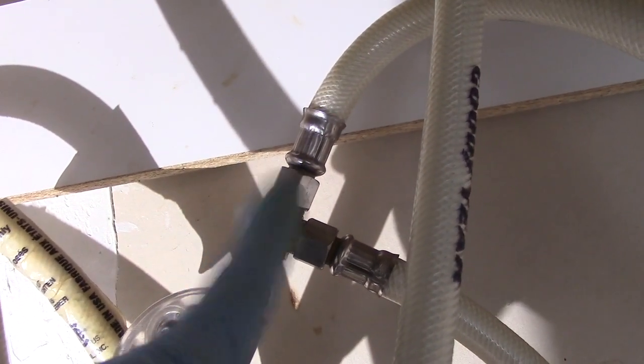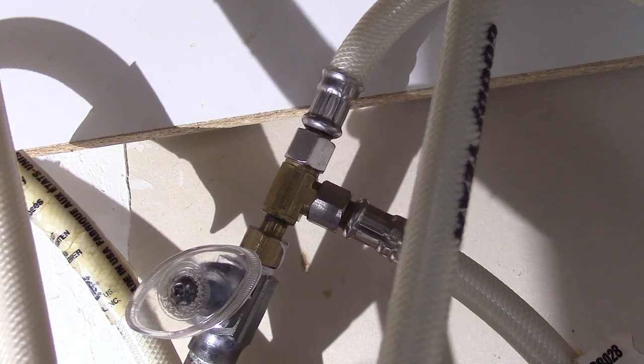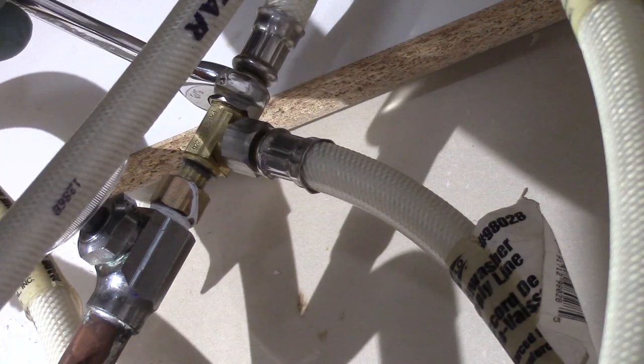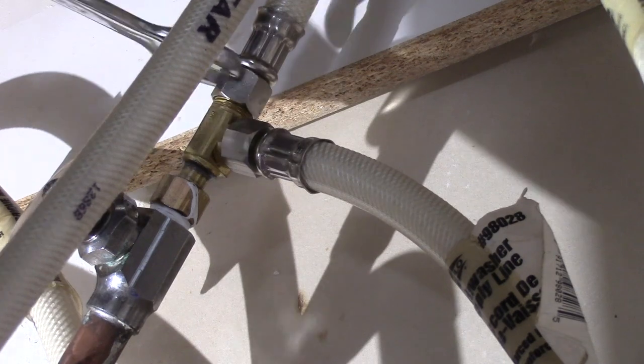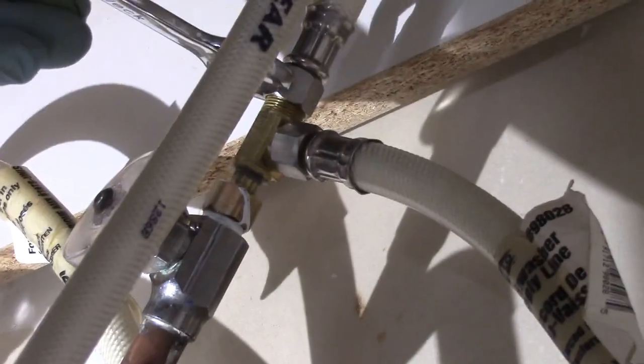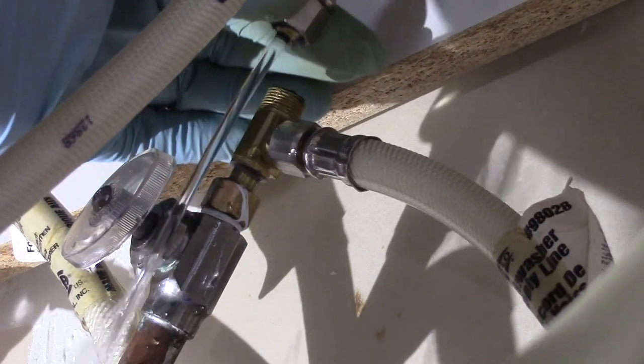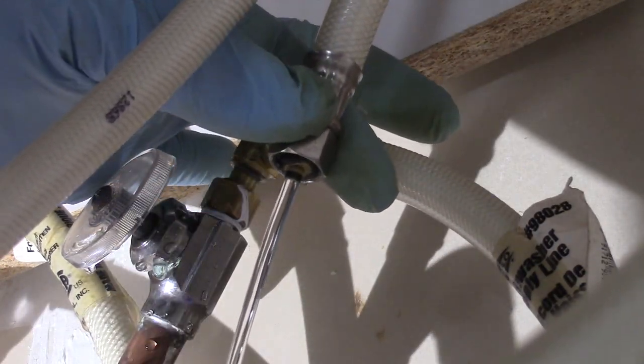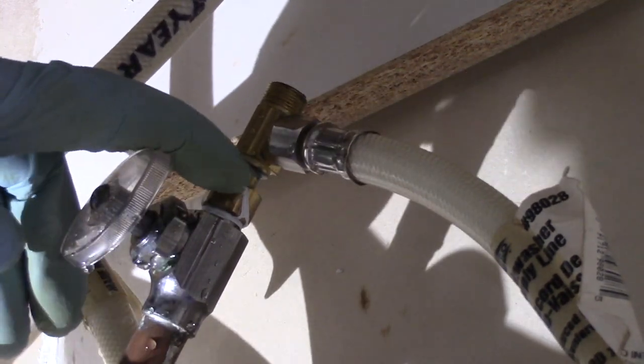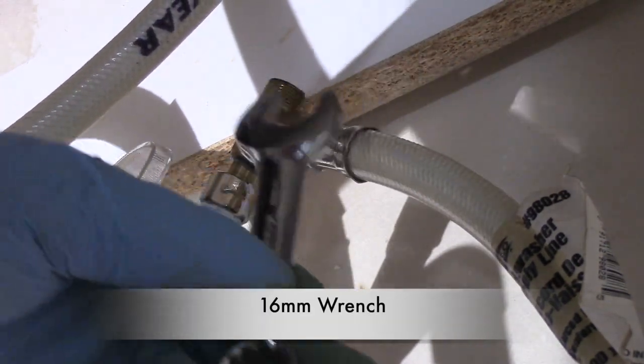Next we'll undo the top hose and connect it to the shut off valve. We will use a 5/8 wrench for this. Then we'll undo this T connector and we'll use a 16 millimeter wrench for this.